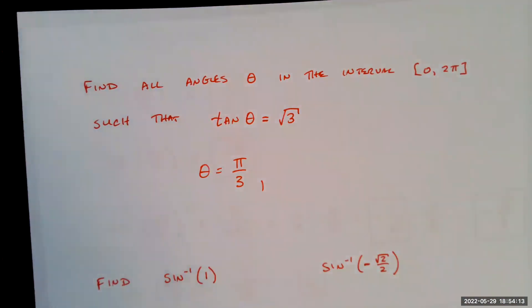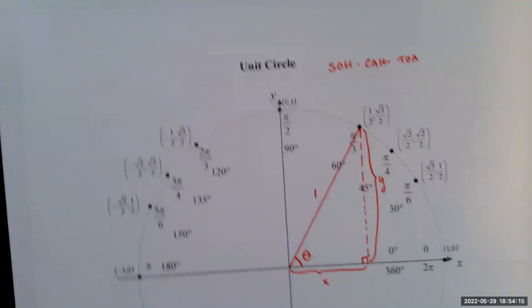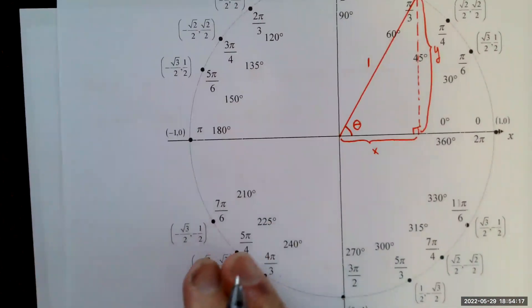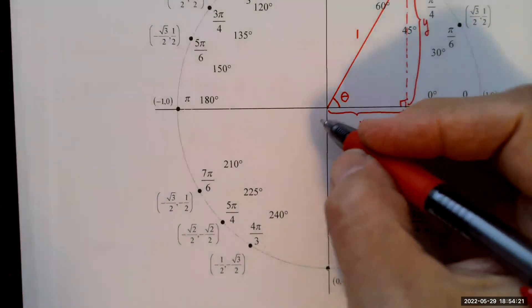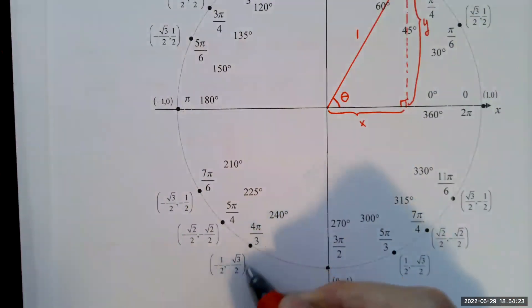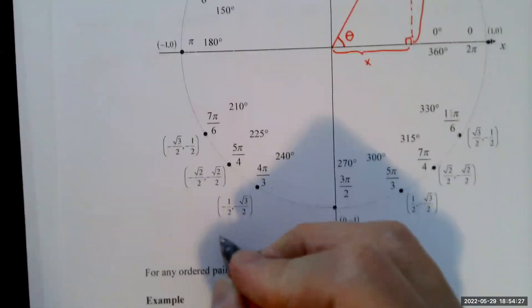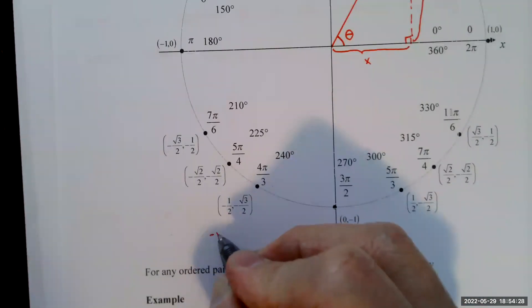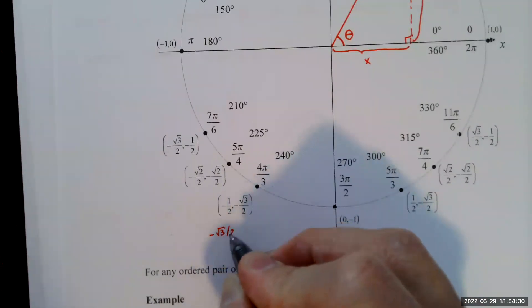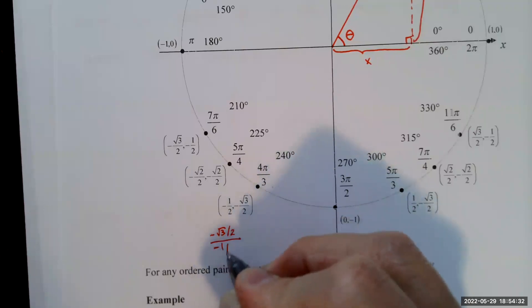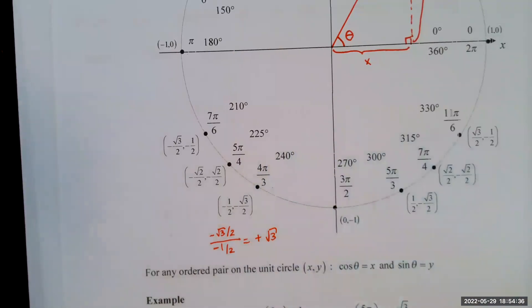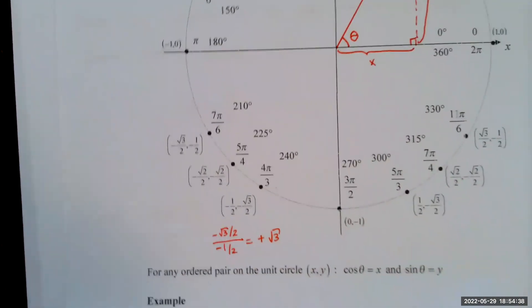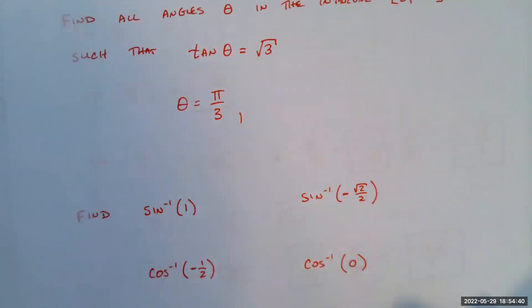That's not the only solution — in the third quadrant, tangent is also positive. Negative √3/2 divided by negative 1/2 gives a positive √3, so tangent also equals √3 at 4π/3.